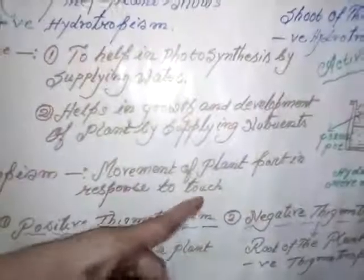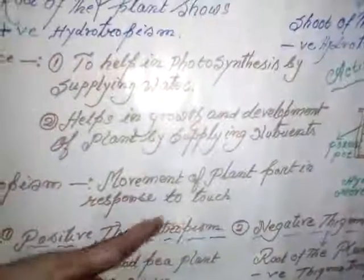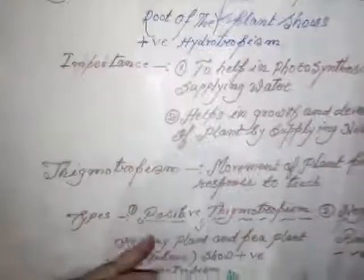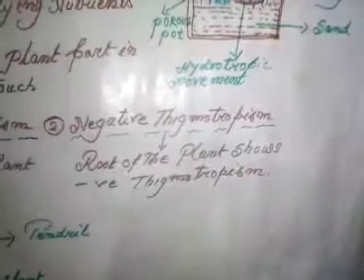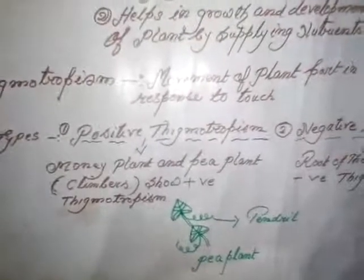My next topic is sigmotropism. Sigmo means touch, so the movement of a plant part in response to touch is called sigmotropism. It is of two types: positive sigmotropism and negative sigmotropism.